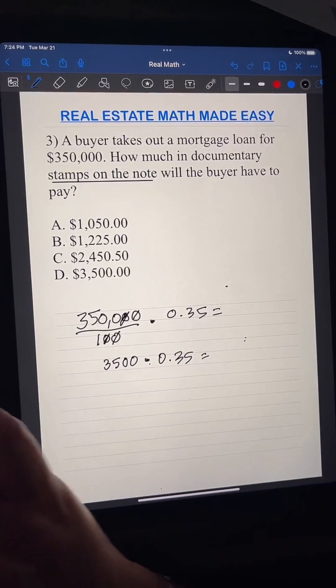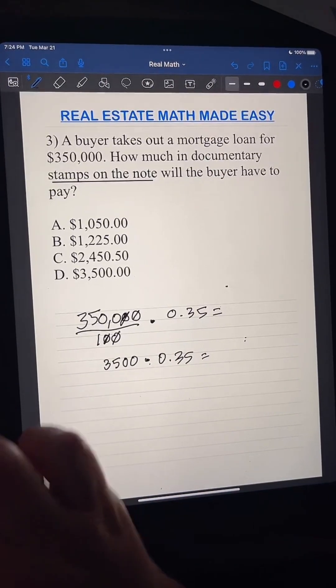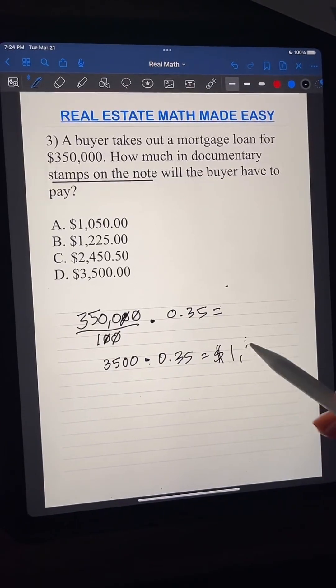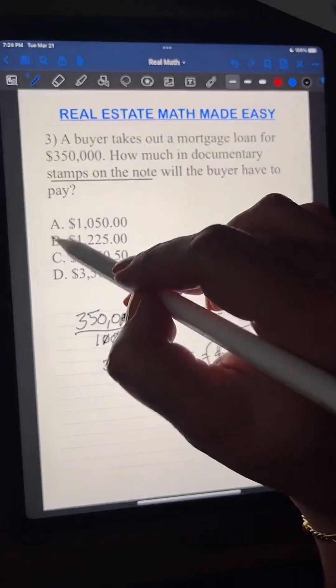So now that we're left with 3,500 times 35 mils, okay? So 3,500 times 0.35, that's going to equal $1,225. That is going to be B.